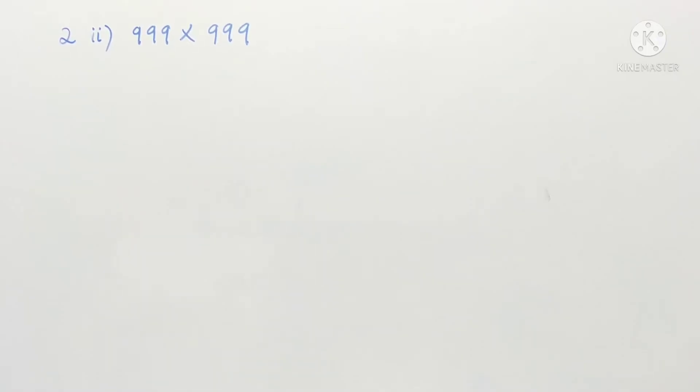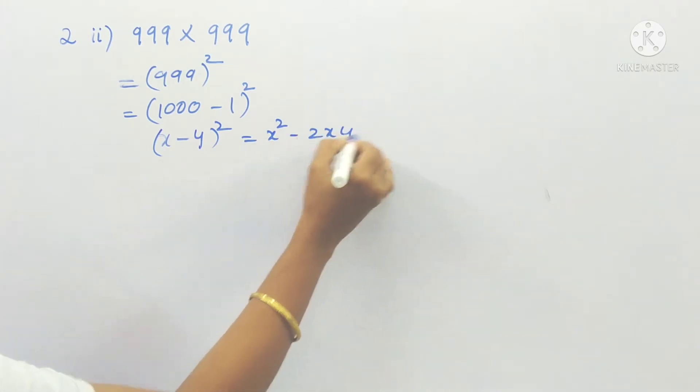Second one, 999 into 999. So when bases are equal, the powers will be added. So it is 999 whole square. So I can write this 999 as 1000 minus 1 whole square. So this is in the form of x minus y whole square.